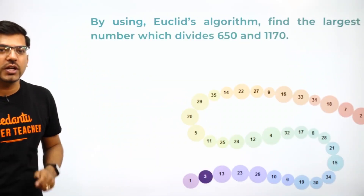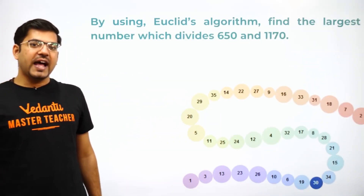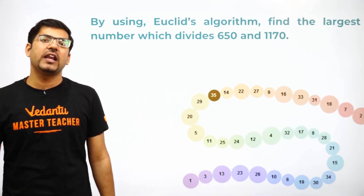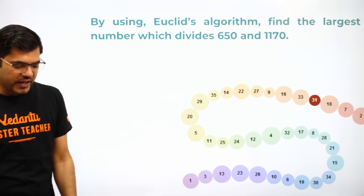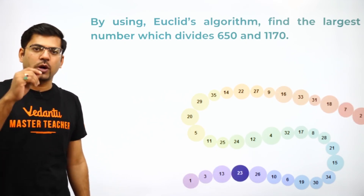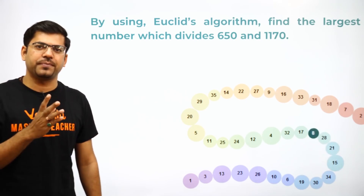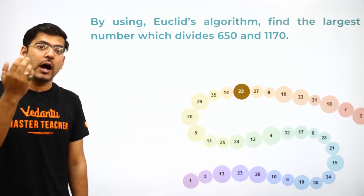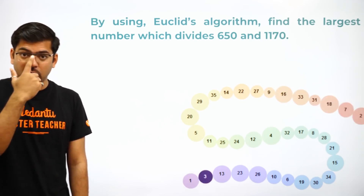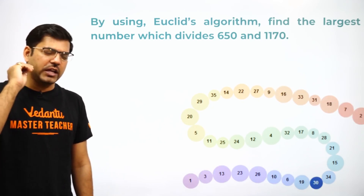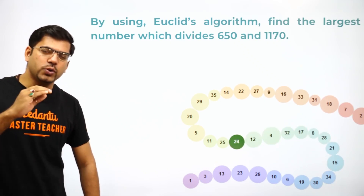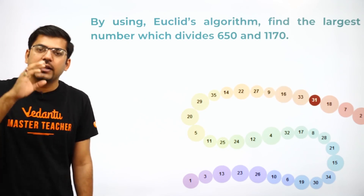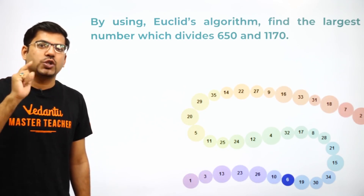Moving on to our next question: by using Euclid's algorithm, find the largest number which divides 650 and 1170. Now this is very important. Many of you would get the answer easily, but some of you might feel trouble knowing where to find HCF and where to find LCM. I will give a very clear and easy rule. See here it is asking: find the largest number which divides these two numbers.